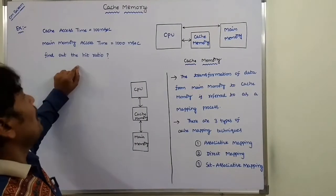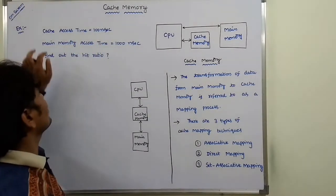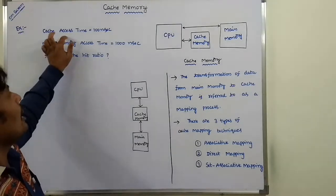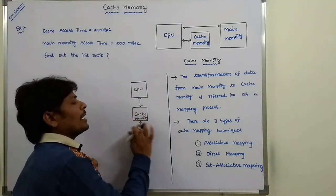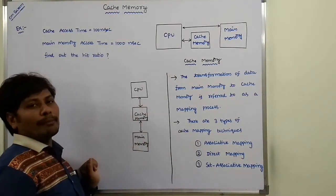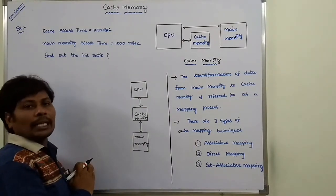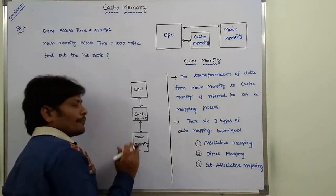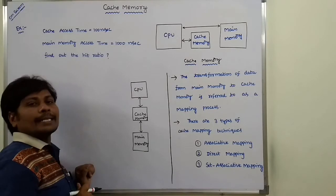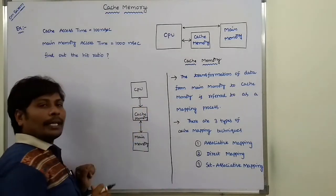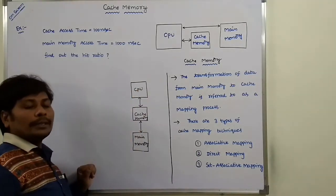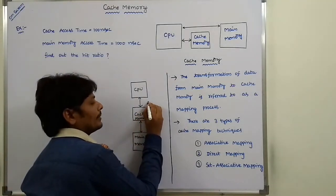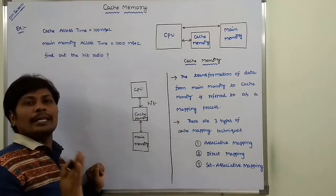Consider the problem: cache access time equals 100 nanoseconds, main memory access time equals 1000 nanoseconds — find the hit ratio. Cache memory is located between the CPU and main memory. When the CPU wants to access a particular word, it first checks the cache memory. If the word is available, the CPU reads that word from the cache memory. That is called hit time. Cache access time equals hit time, which is 100 nanoseconds.